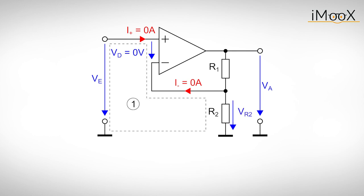Now we can relate the input voltage, the differential mode voltage, and the voltage drop on resistor R2 according to loop 1. Since VD is zero volts, the voltage drop on R2 equals the input voltage. This allows us to determine the current flowing through R2.